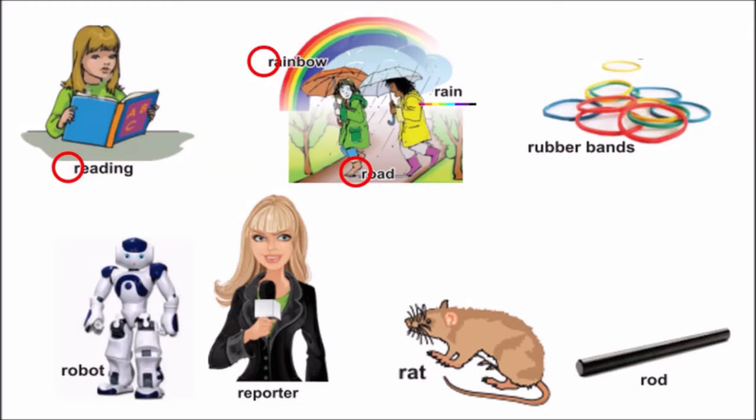Now look for letter R in rain. Correct. R, R, rain. R, rain. R is the first sound.